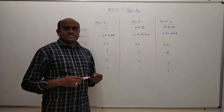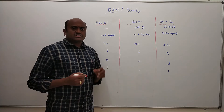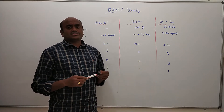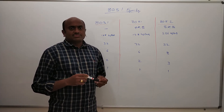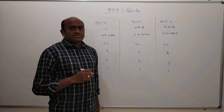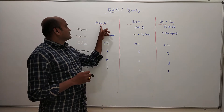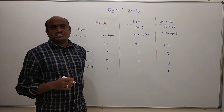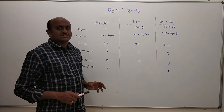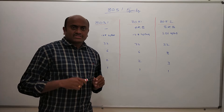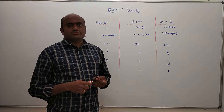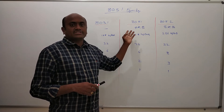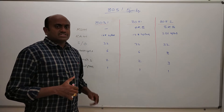Welcome to the second video in the series on 8051. In this video we will learn about the features of the microcontrollers available in the 8051 family. In the family of 8051, there are three microcontrollers: 8031, 8051, and 8052. These are the three important devices in the family. I have selected six parameters to compare them.